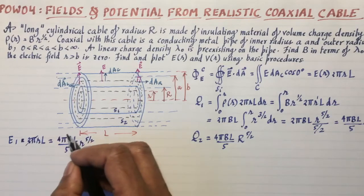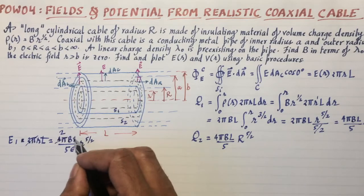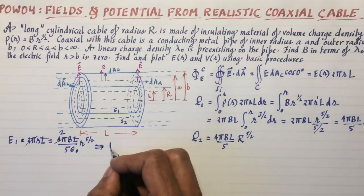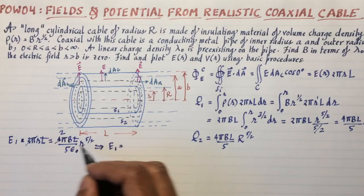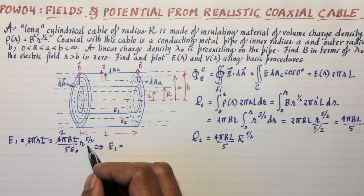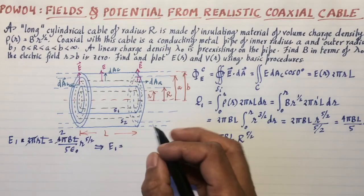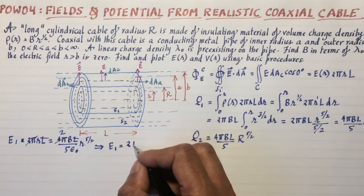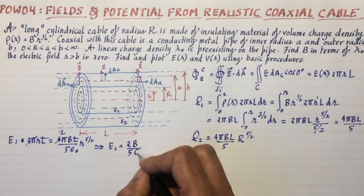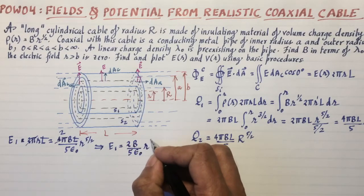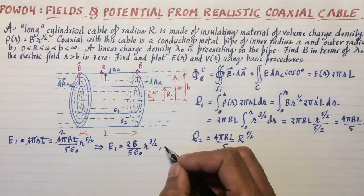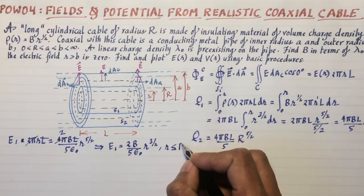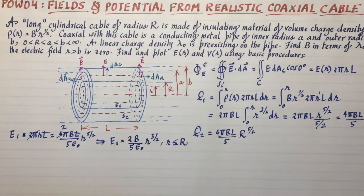And the integral of that is r^(5/2) divided by 5/2. The upper limit contributes, the lower limit doesn't contribute, so that's the answer. So that gives me 4πBL/5 r^(5/2). And q2, which is the charge enclosed by the Gaussian surface 2, it maxes it out at r equals capital R. So that's just 4πBL/5 capital R^(5/2). So now we can find the electric field.